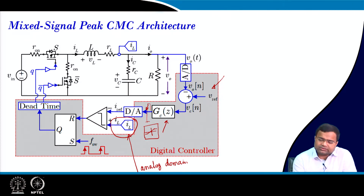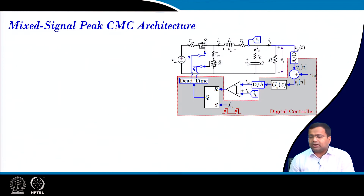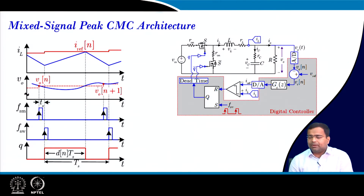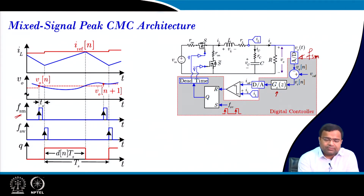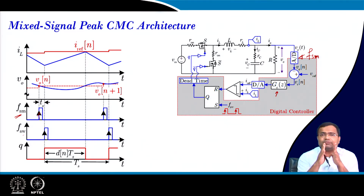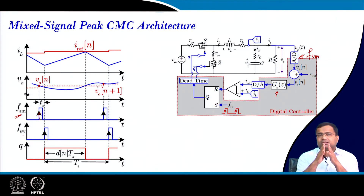In this architecture, since the current is in analog, we need a D-to-A converter, and for the voltage there is already a D-to-A converter. Looking at the control waveform, we need some time for A-to-D conversion as well as computational time. Our sampling clock FSM is used here in synchronism with the switching clock but with a time delay.